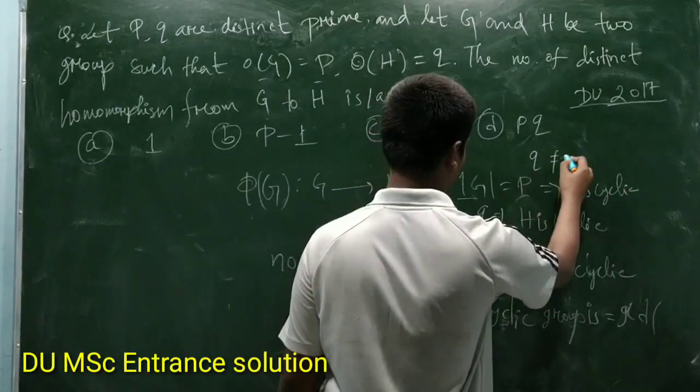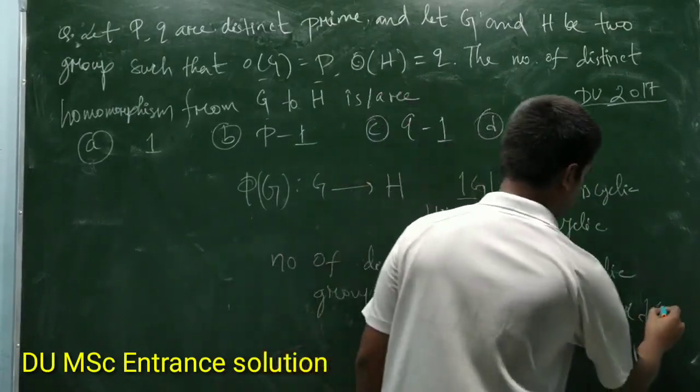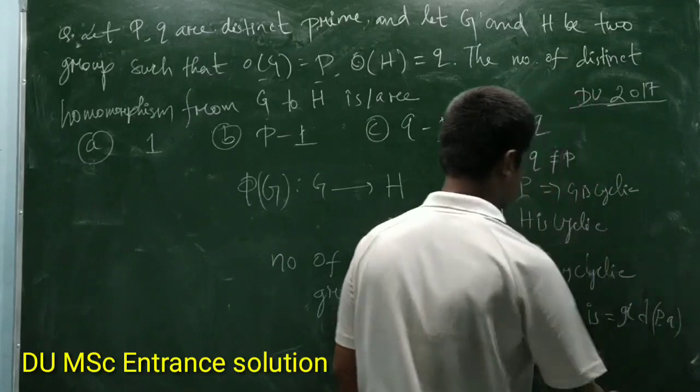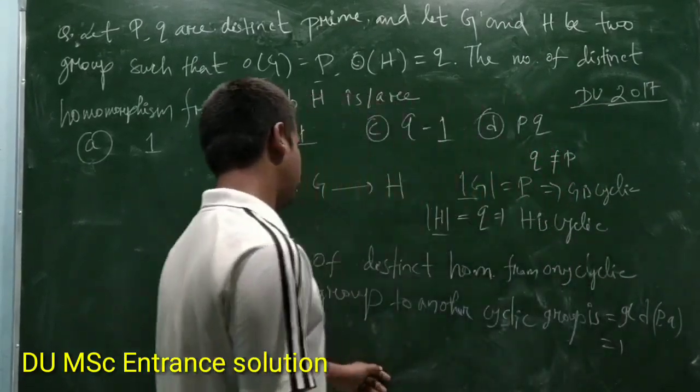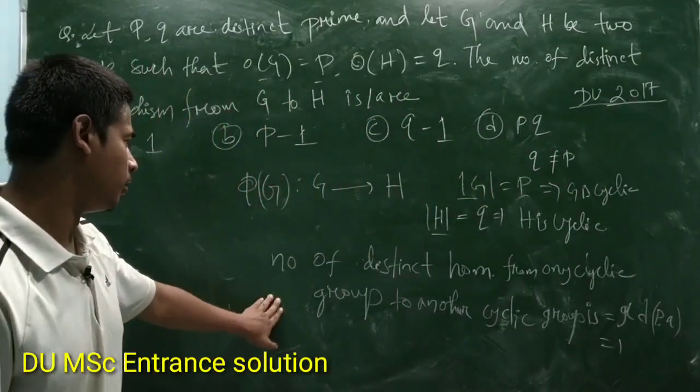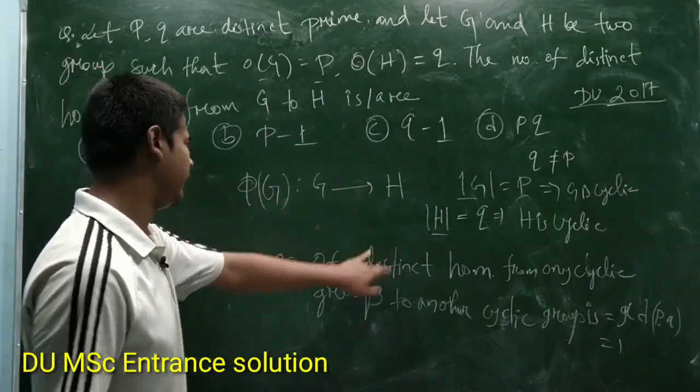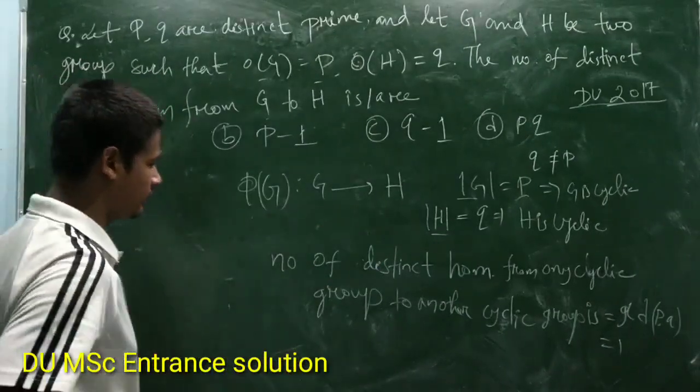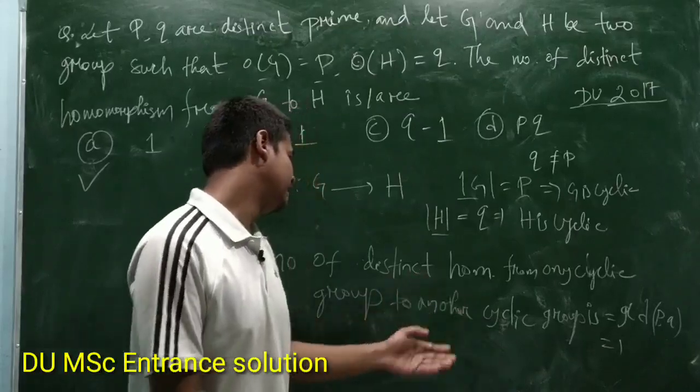are distinct, so Q is not equal to P. So GCD of P and Q is one. So number of distinct homomorphisms from G to H is one. See, if you forget this statement and you don't know this statement, then you can verify easily.